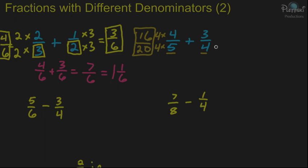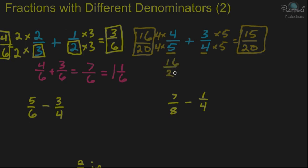For the 3 fourths, we change the 4 to a 20 by multiplying it by 5, and you do the same thing to the top, so you're left with 15 over 20. So we have our two fractions with like denominators: 16 over 20 plus 15 over 20. We leave the denominator the same and add the numerators: 16 plus 15 gives us 31. And that can be simplified to 1 and 11 over 20.